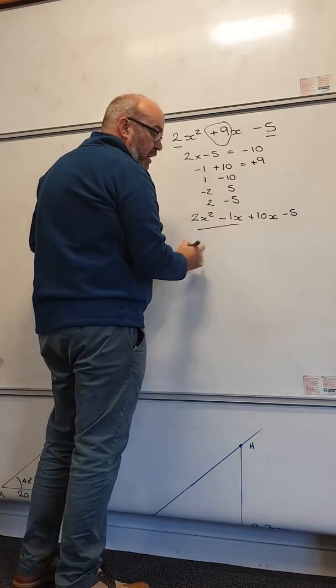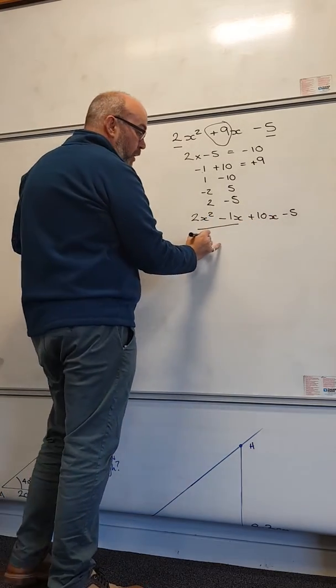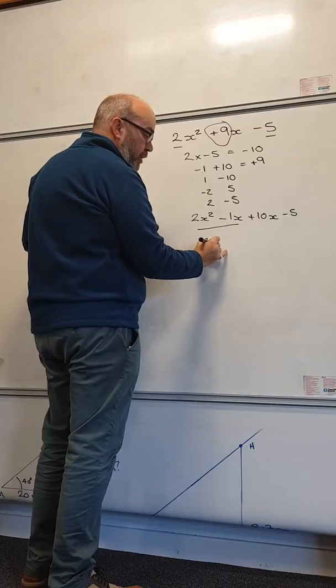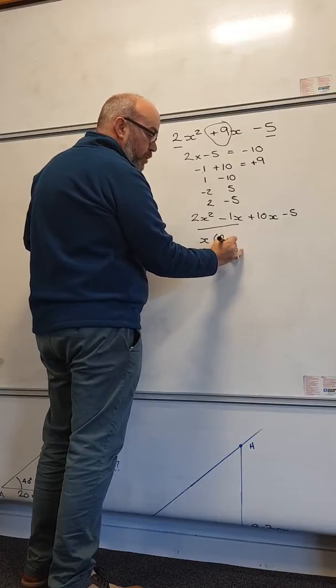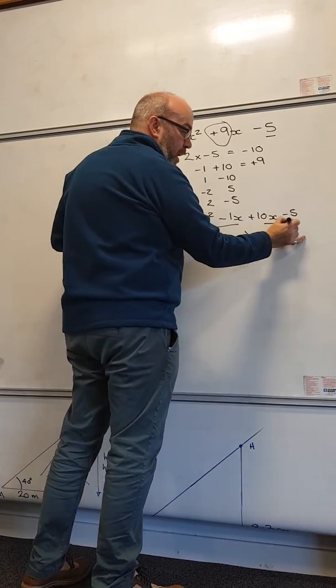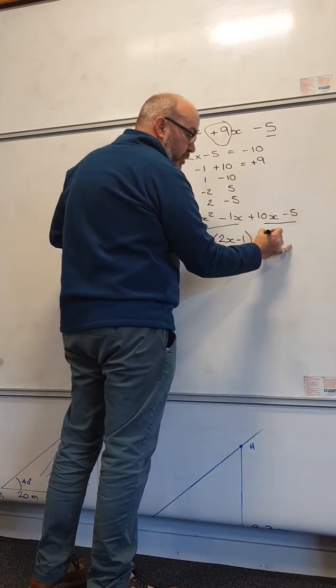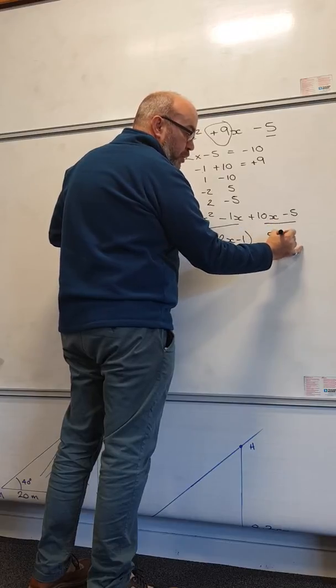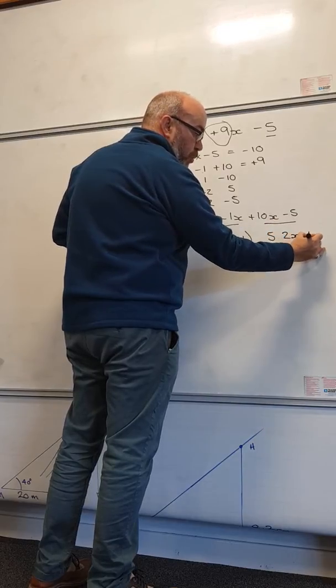If I take my first half and find a common factor in it, this will give me x times 2x minus 1. And if I take my second half, I'm going to have 5 lots of 2x minus 1.